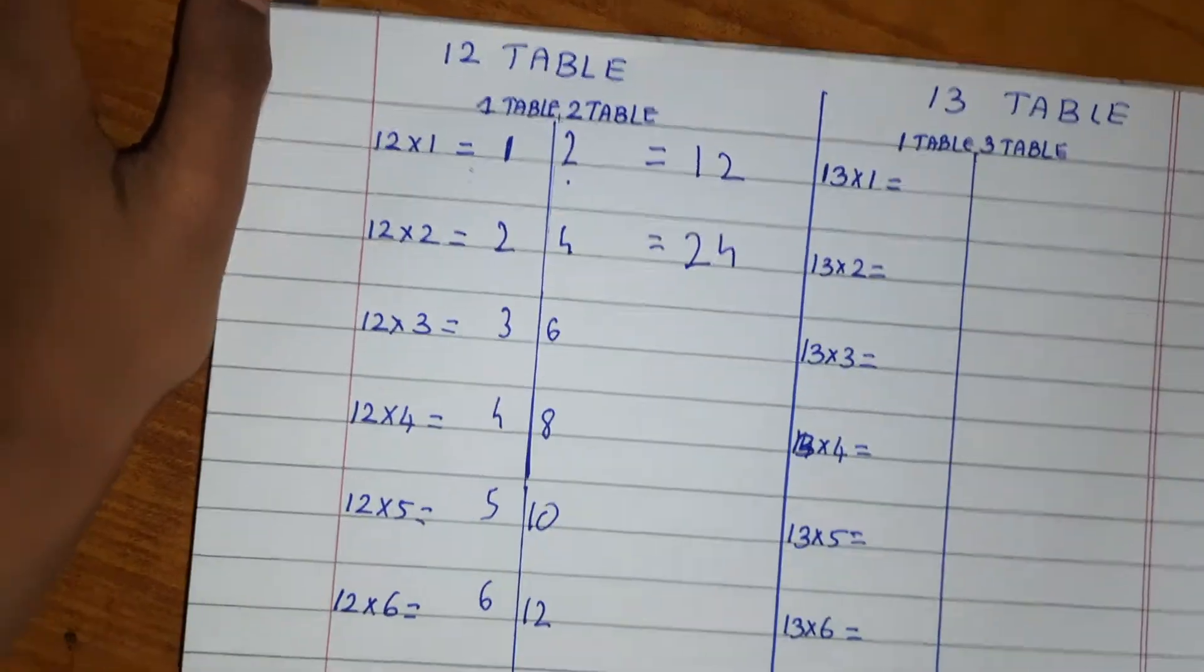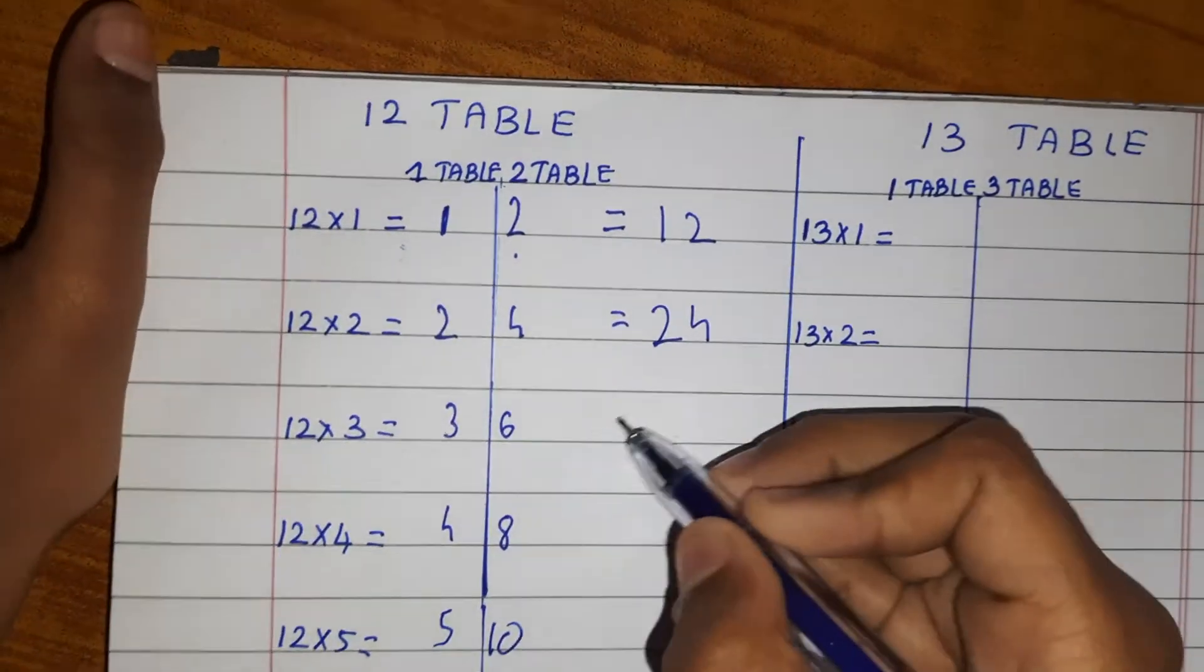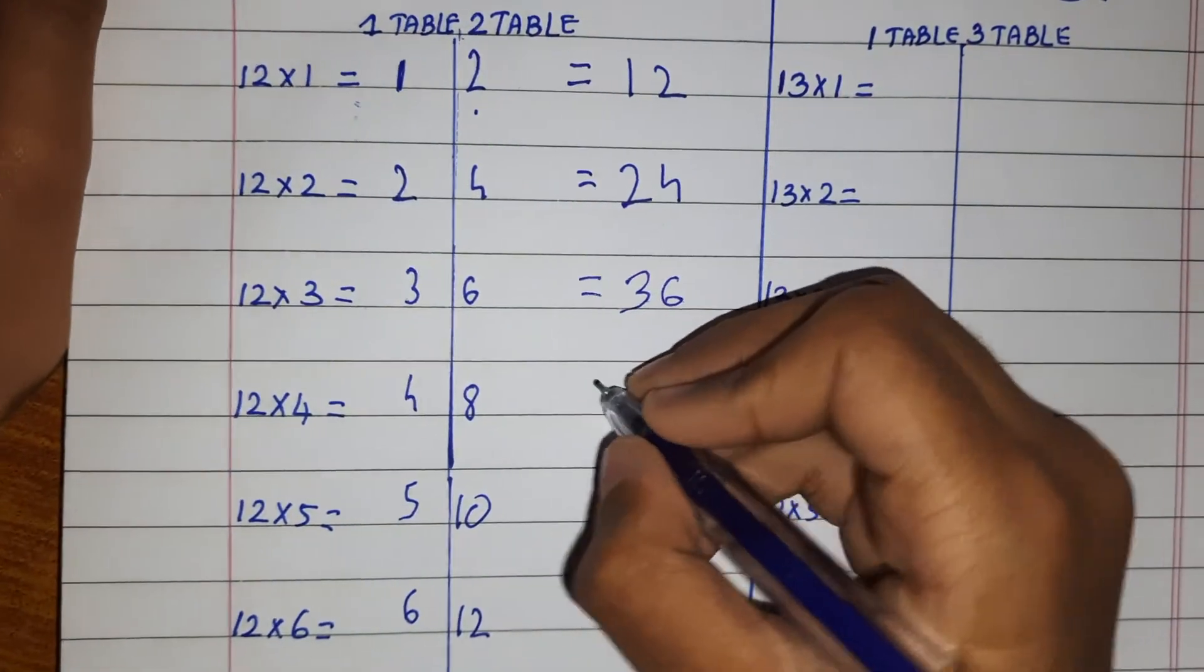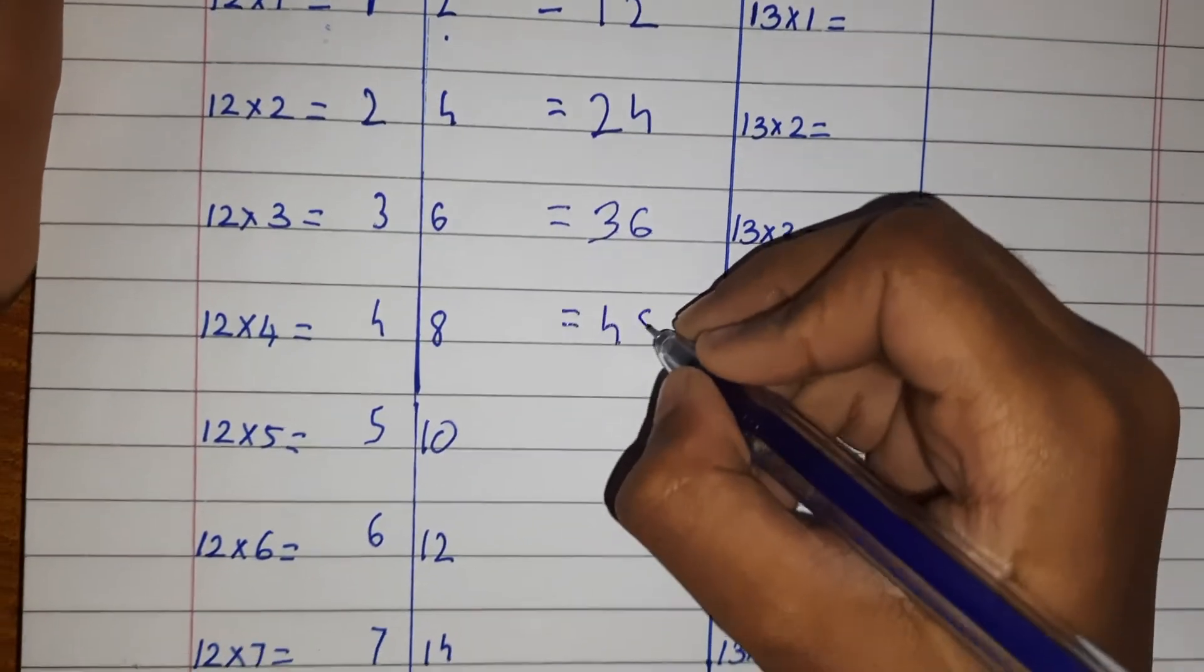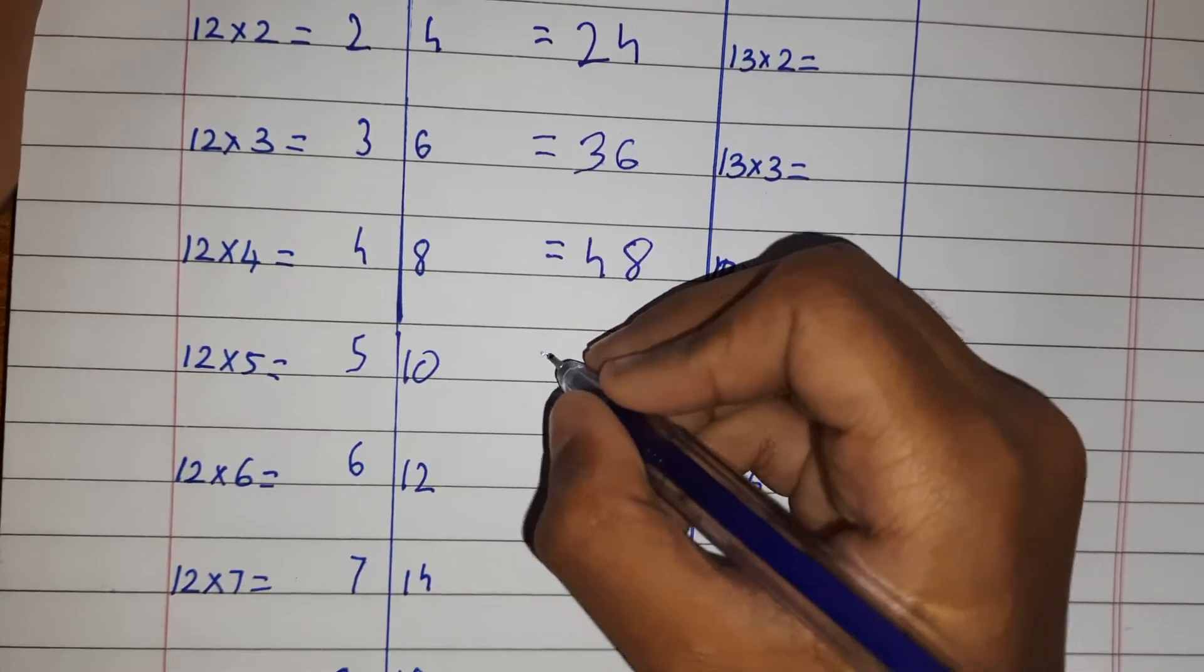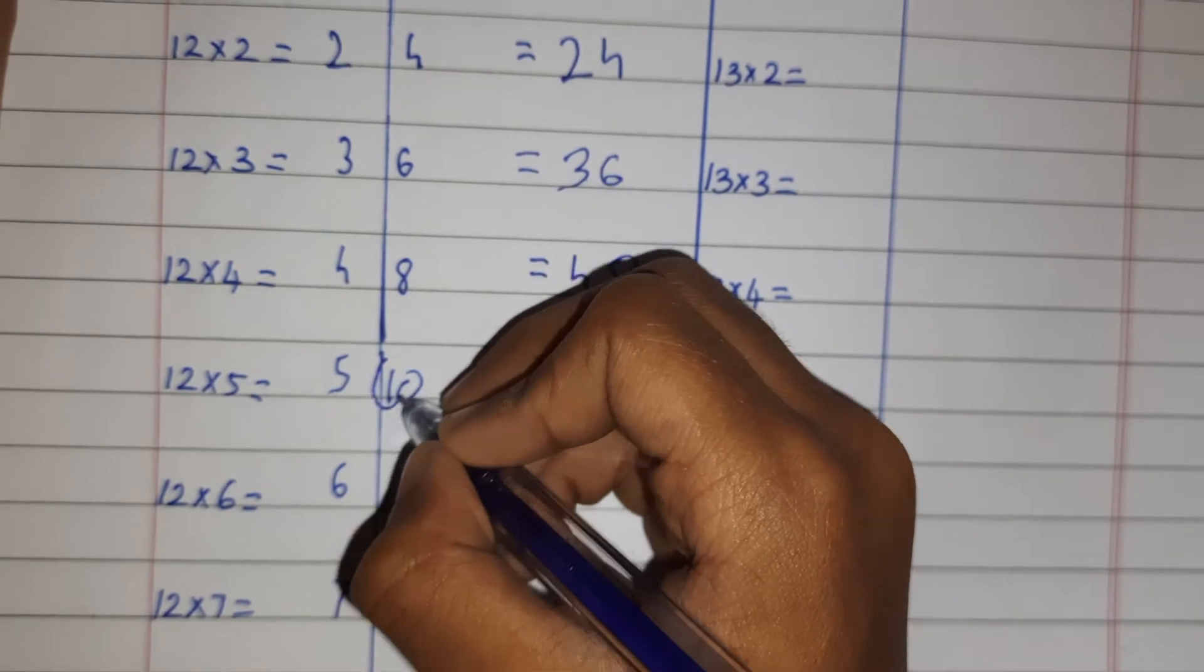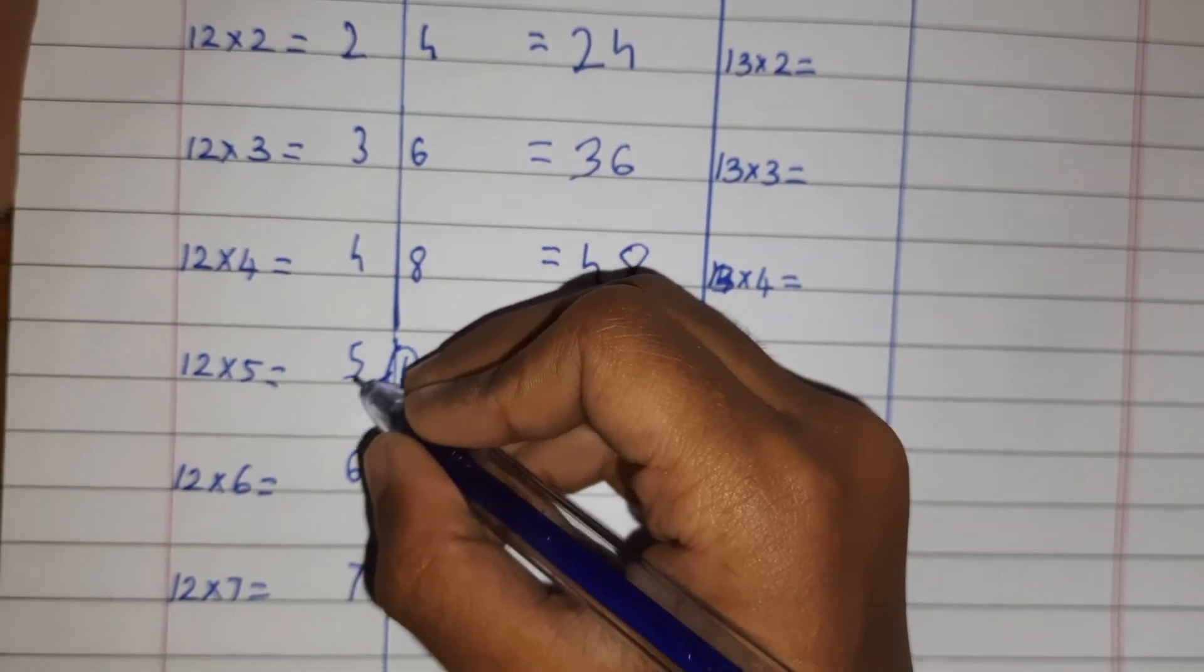And then 36, then 48. Then what we should do is, there's two digits, so take this one and add it to the five.